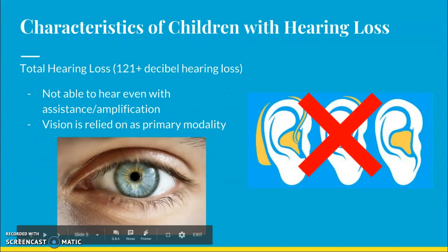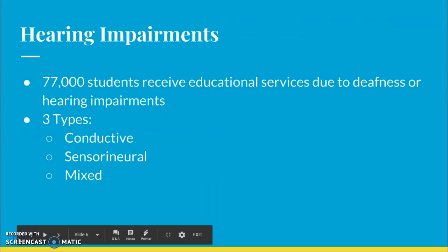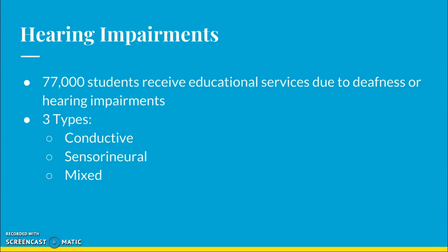Our last and fifth level of hearing loss is total hearing loss, where it's over 121 decibels. These individuals are unable to hear even with assistance or amplification, and they rely primarily on vision to pick up cues and go about their everyday lives. Over 77,000 students receive educational services due to deafness or hearing impairments around the U.S. Also, one in four Americans suffer from some type of hearing impairment or deafness.